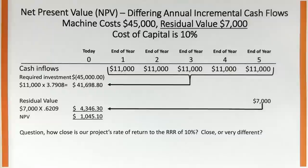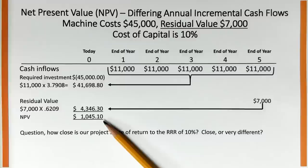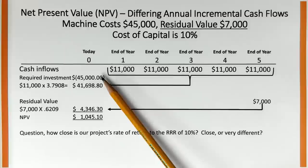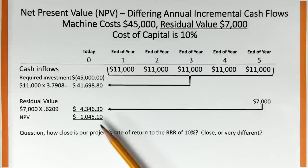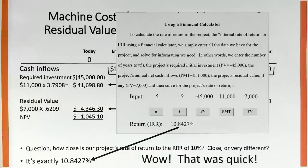The NPV told us the project earns more than 10%, but how much more? The return on the project is 10.8427% — very precise. This is the internal rate of return (IRR). On the calculator, enter N=5, PV=-45000, PMT=11000, FV=7000, and solve for I. The calculator uses trial and error internally, running many NPV calculations until it finds the interest rate where present value equals zero. After a moment it returns 10.8427%.